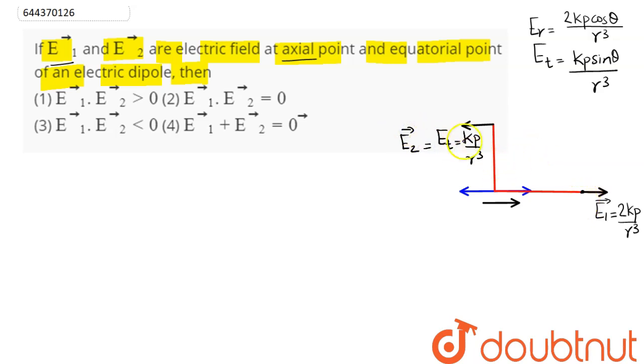When we make dot product E1 dot E2, E1 vector and E2 vector are anti-parallel to each other. This comes out to be 2kp divided by r cube, and angle between both of them is 180. So cos 180 is minus 1, hence this overall product comes to be negative.